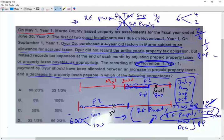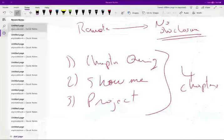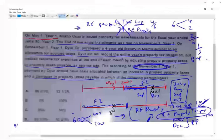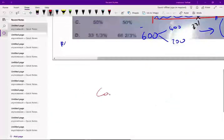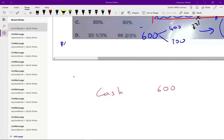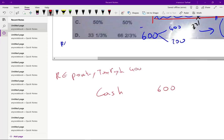So when we make the payment, we're going to credit cash 600 of which the real estate property taxes payable is debited $400 because we were accruing and we're going to debit for the rest, prepaid real estate property taxes for 200.